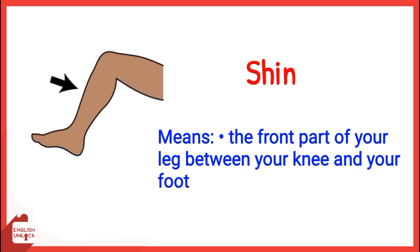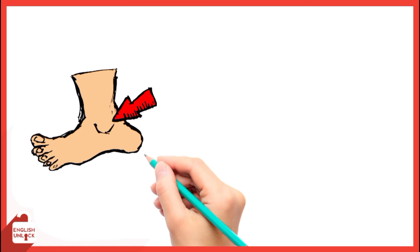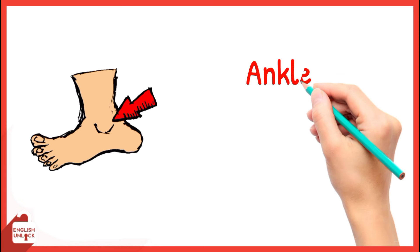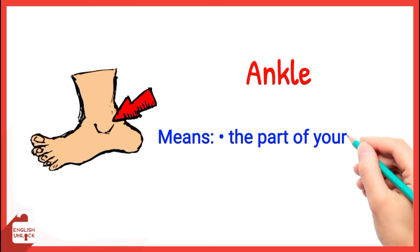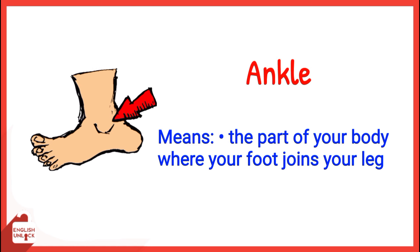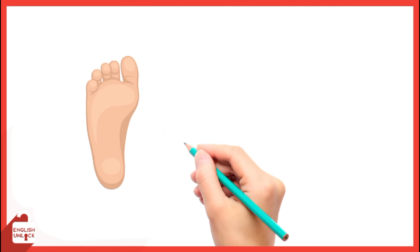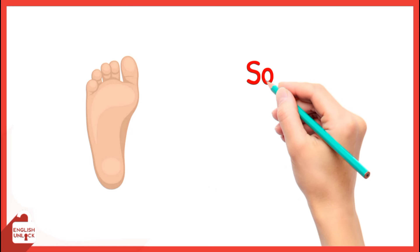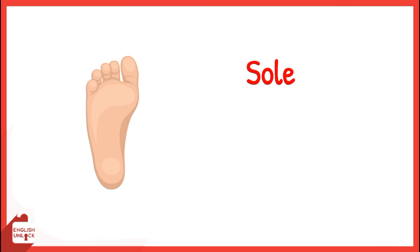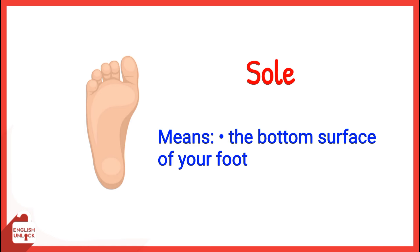Shin means the front part of your leg between your knee and your foot. Ankle means the part of your body where your foot joins your leg. Sole means the bottom surface of your foot.